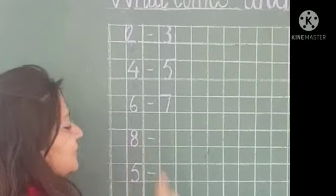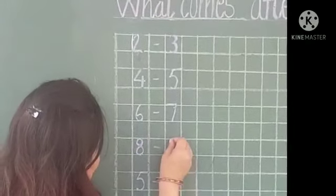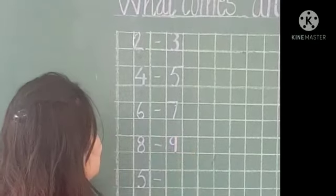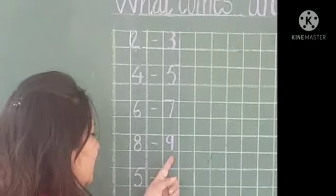Which number is this? This is number 8. And number 9 comes after number 8. So we will write number 9 in this block.